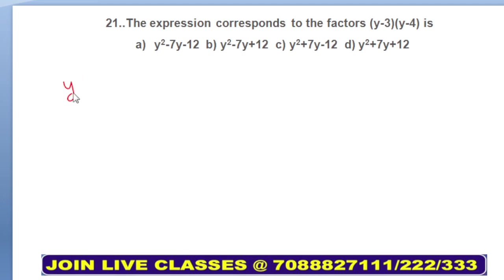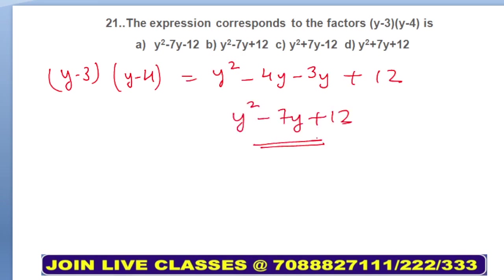The expression that corresponds to the factors (y - 3)(y - 4). Open the brackets: y² - 4y - 3y + 12, so y² - 7y + 12. This will be your answer, y² - 7y + 12. Option B is your answer.